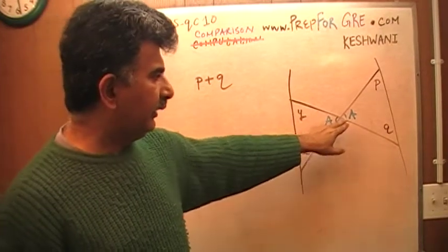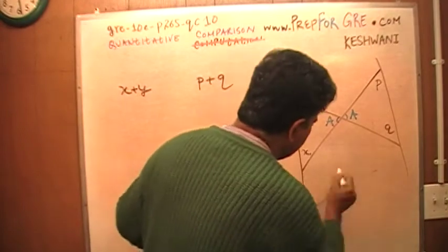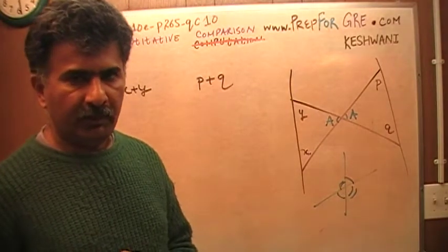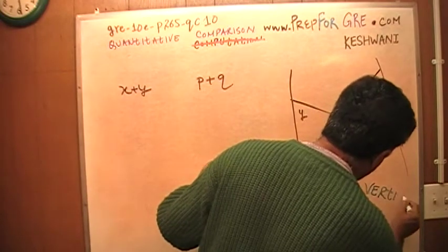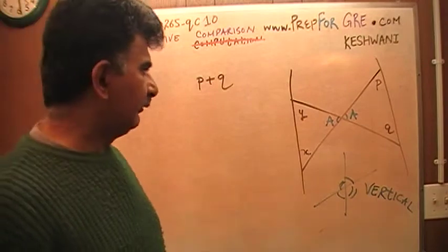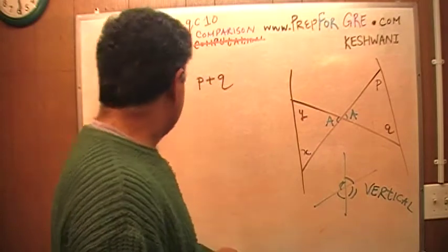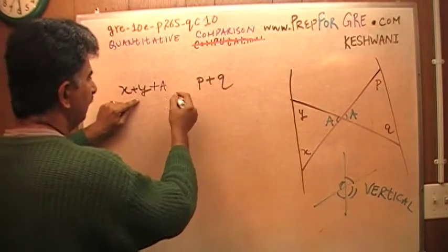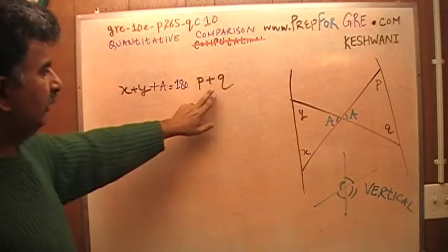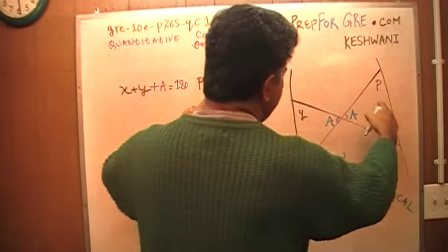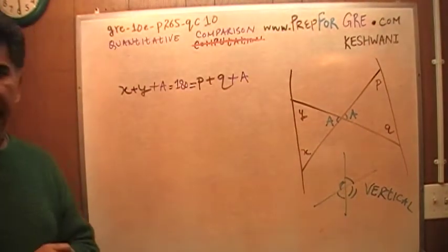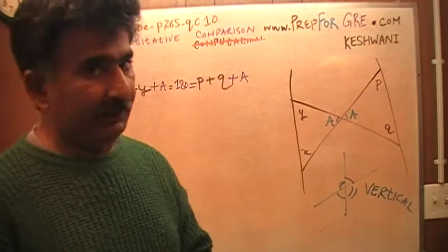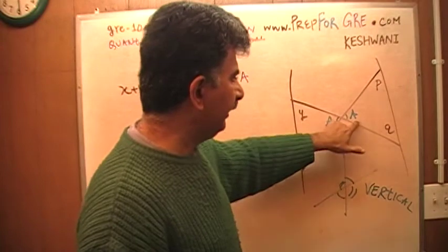If this is angle a, then that would also have to be angle a. Because this angle has to equal this angle, and this angle has to equal that angle, when the two lines intersect. They actually have terminology for this in geometry — these are referred to as vertical angles, though I just call them opposite angles. So if I call this a, then that also has to be a. Then I know that x plus y plus a has to equal 180. And p plus q plus a also has to be 180, because they are the sum of the three angles in a triangle. We know that the sum of three angles in any triangle is 180. Therefore p plus q plus a has to equal 180.